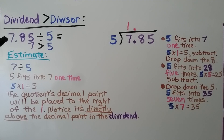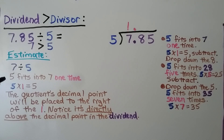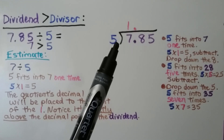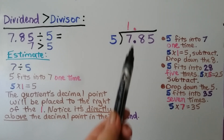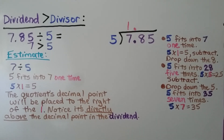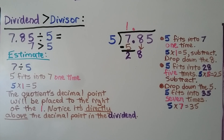We have 7 and 85 hundredths divided by 5. This dividend is greater than the divisor — 7 whole is greater than 5. We can estimate 7 divided by 5. The 5 fits into 7 one time because 5 times 1 is 5. We put a 1 here, and the quotient's decimal point will be placed to the right of the 1, directly above the decimal point in the dividend. The 5 fits into 7 one time, so we put a 1 here. 5 times 1 is equal to 5. We multiply, then subtract, and we get a 2.